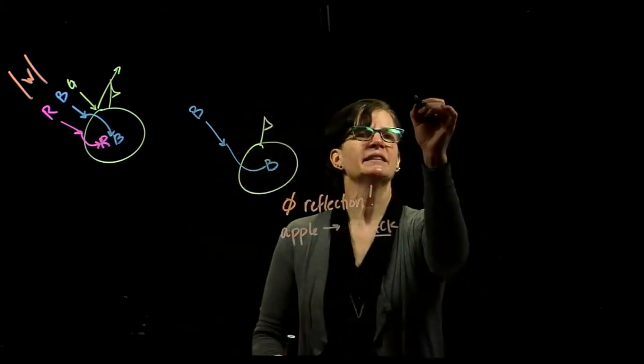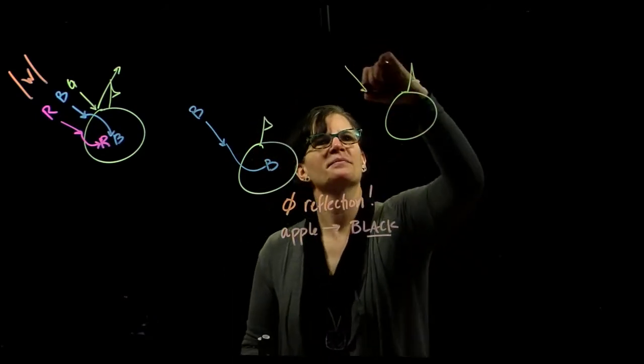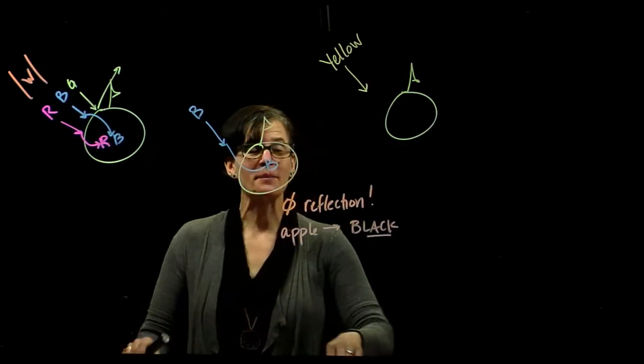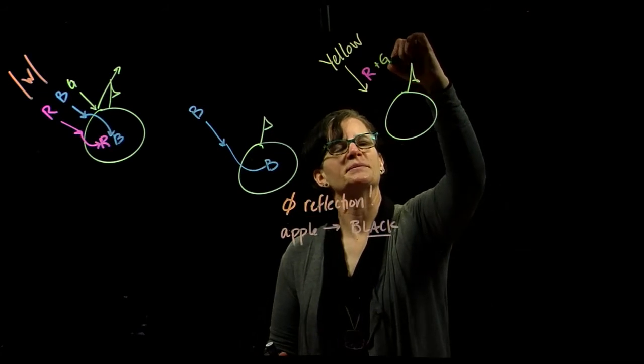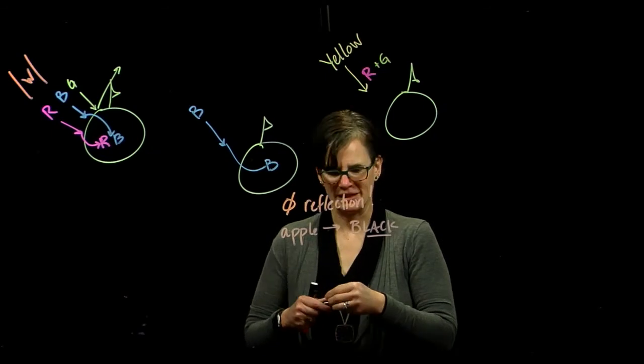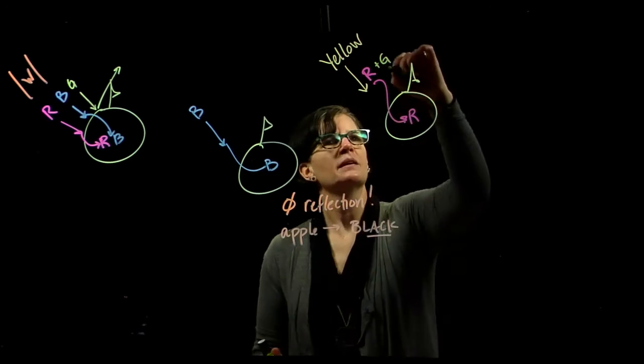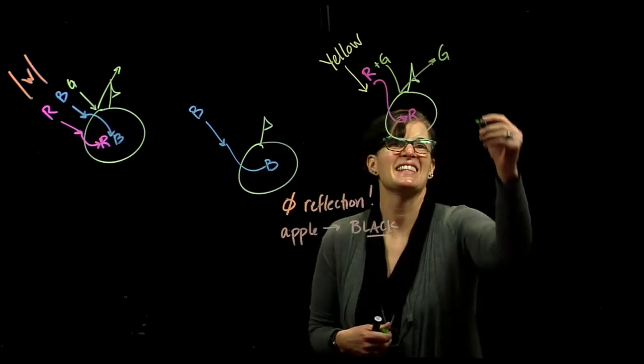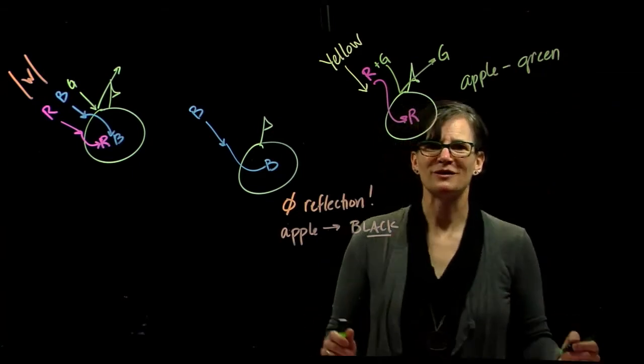What if instead of a blue light, I present that apple with a yellow light? Well, we need to remember that yellow is made up of both red and green. And so as I present that apple with a red and green light, the red light, well, that gets absorbed by the apple. But the green light bounces off. And indeed, I see the apple as green, as I would if it was under white light.